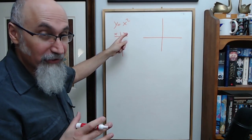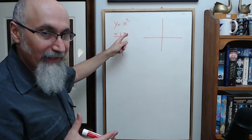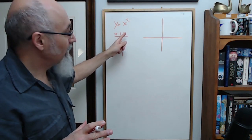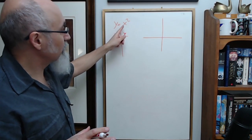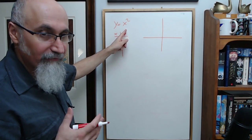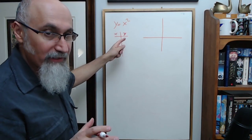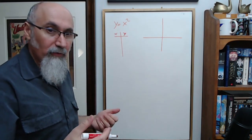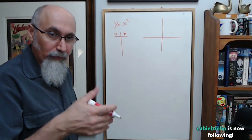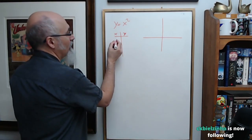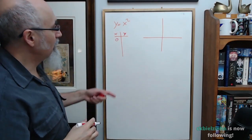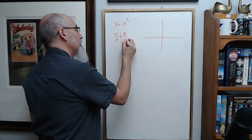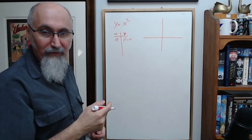A function is a special type of relationship where for a given x you can only have one y — for a given input you can only have one output. We have y equals x squared; x is our independent variable (input) and y is our output. To graph this, just put in an input and get an output. When x is 0: y equals 0 squared equals 0, so the point (0, 0) is on the graph.